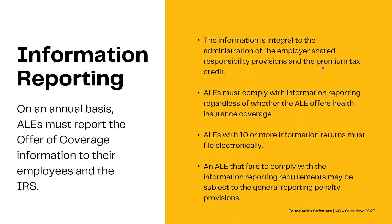Just so you are aware, the 1095-C filing helps the IRS understand if taxpayers are taking the premium tax credit by accident or on purpose. Also note that the mandatory e-filing requirement, which had previously been 250 or more information returns, has finally been reduced to 10 or more. That 10-or-more threshold is an aggregated count — so if you have 10 or more W-2s, 1099s, 1095s, and other included forms in aggregate, all of those forms must be filed electronically.